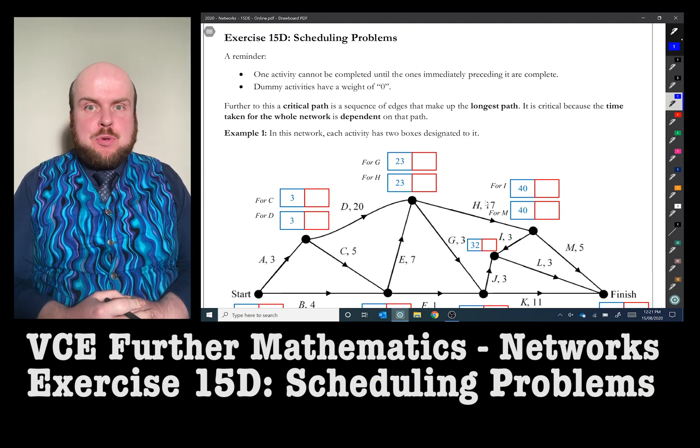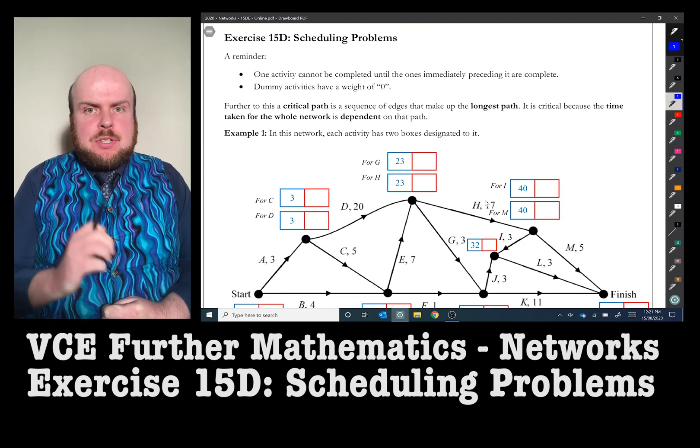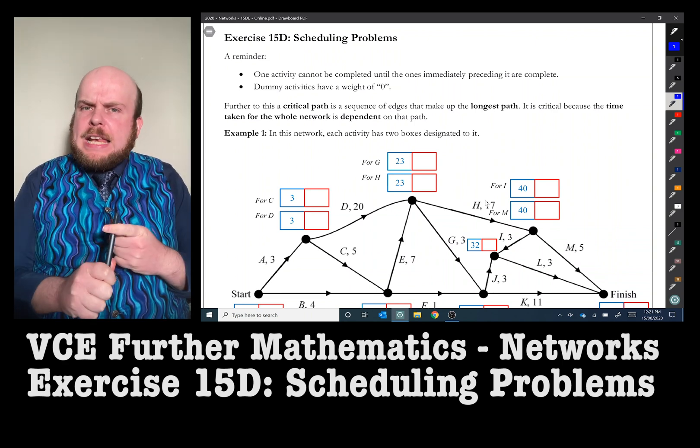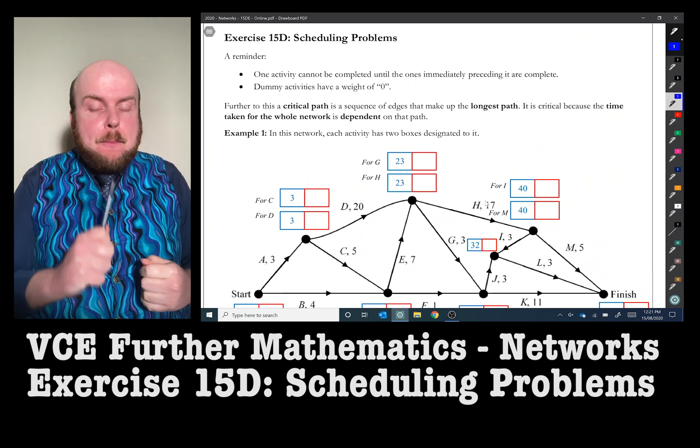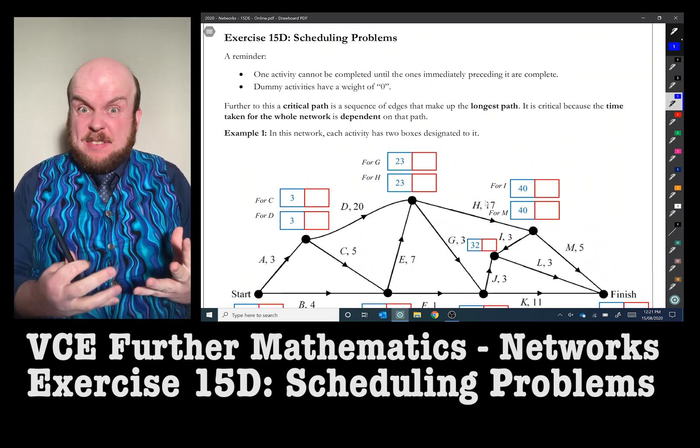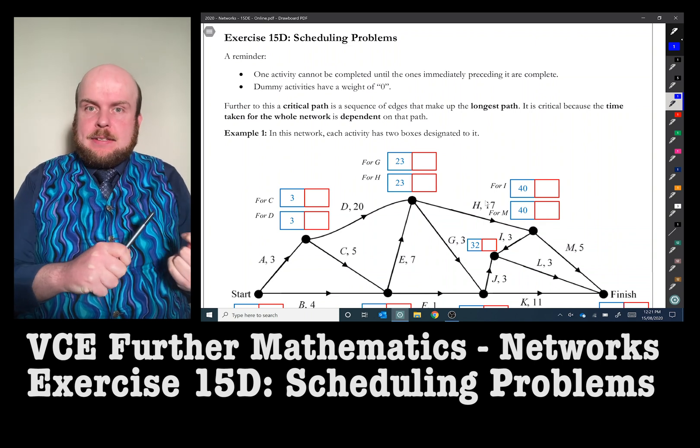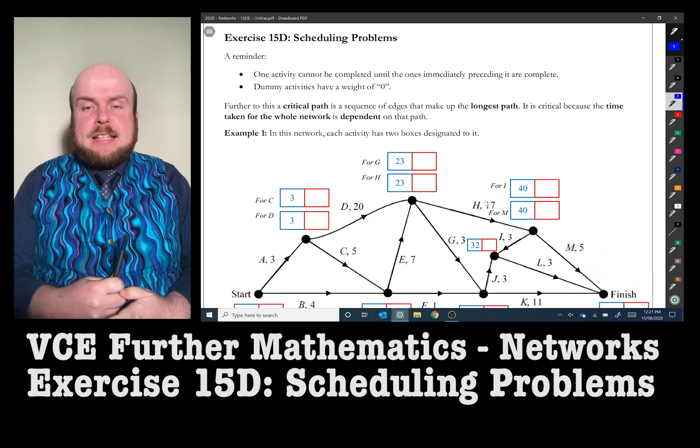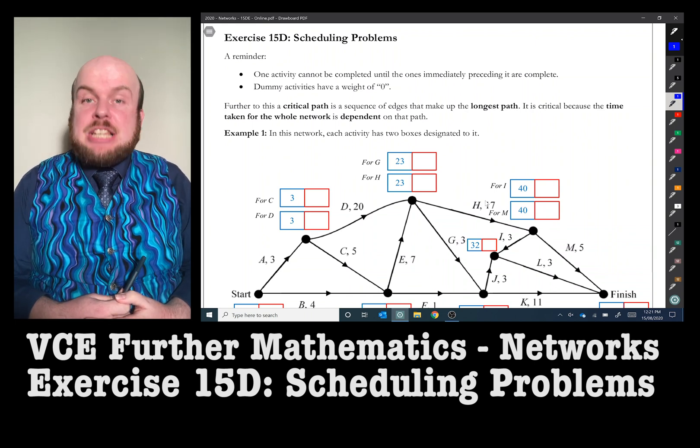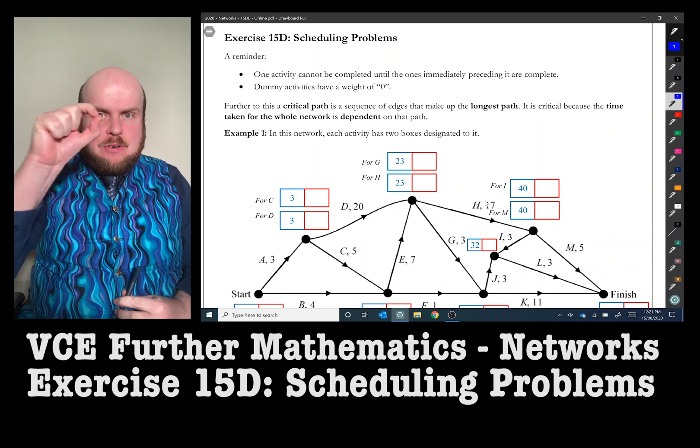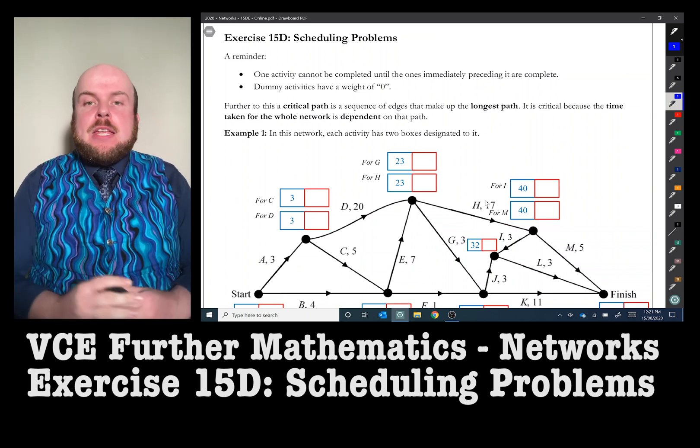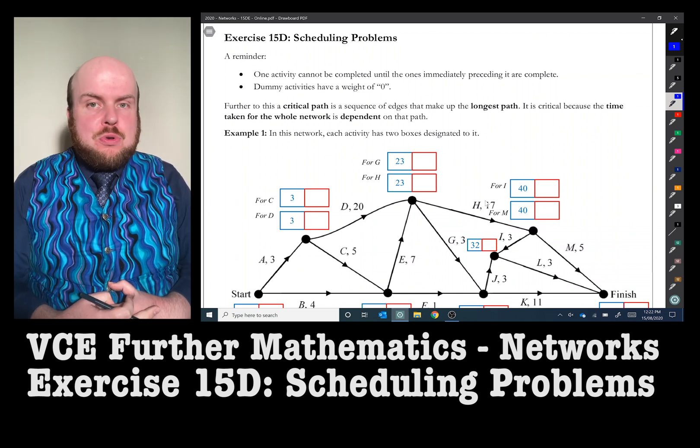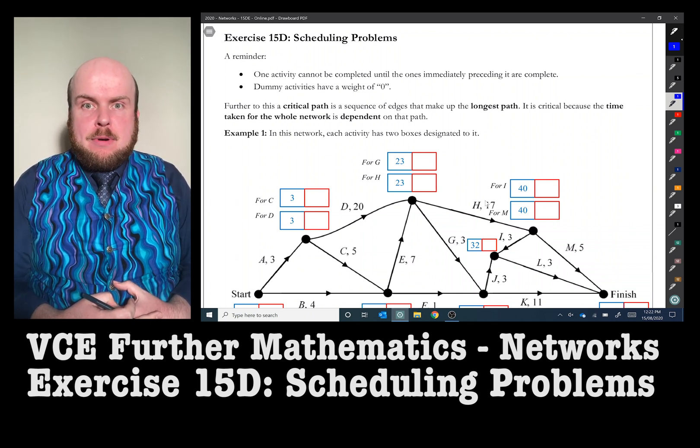Exercise 15D Scheduling Problems. Just to recap from exercise 15C, it's worth remembering that one activity on an activity network cannot be completed or even started until its two predecessors have been done, or two or three or four, however many predecessors it has. The second thing to remember is that any dummy activities have got a weight of zero, nada, nothing. So when we're finding the total amount of time a project should be taking, those things need to be reminded of.